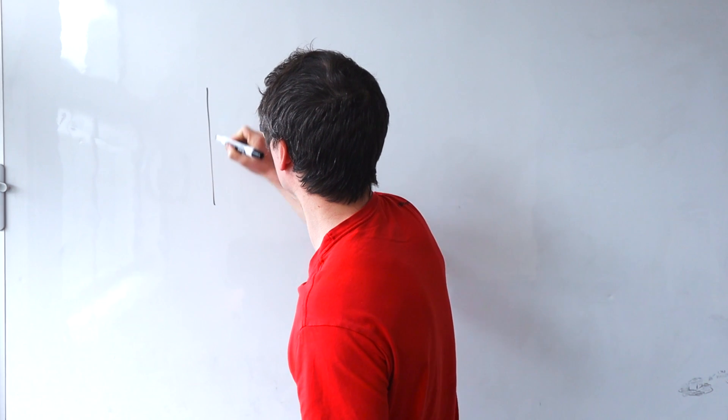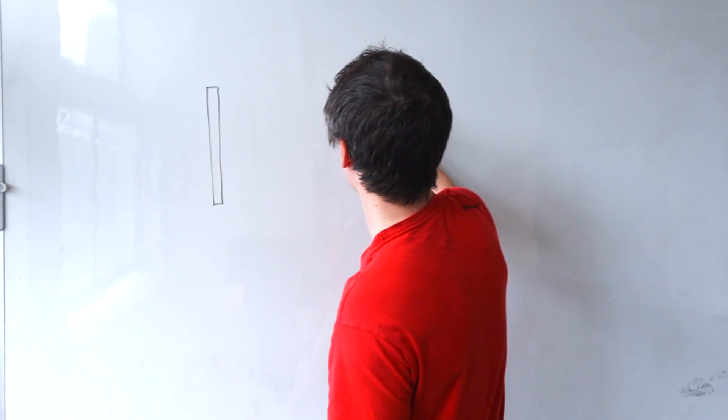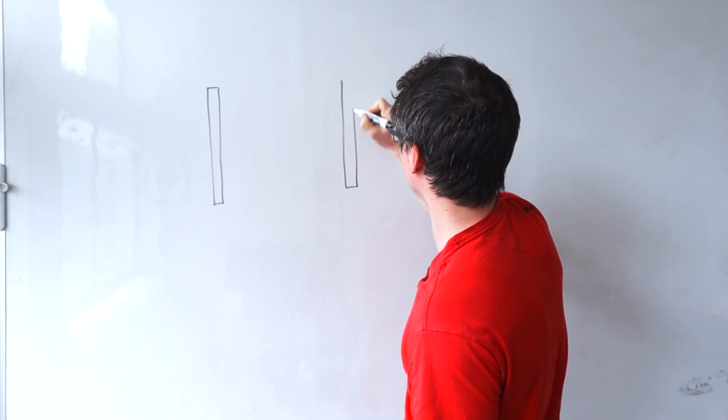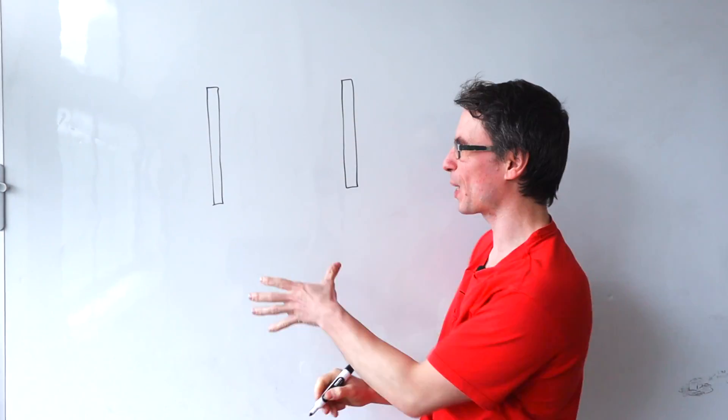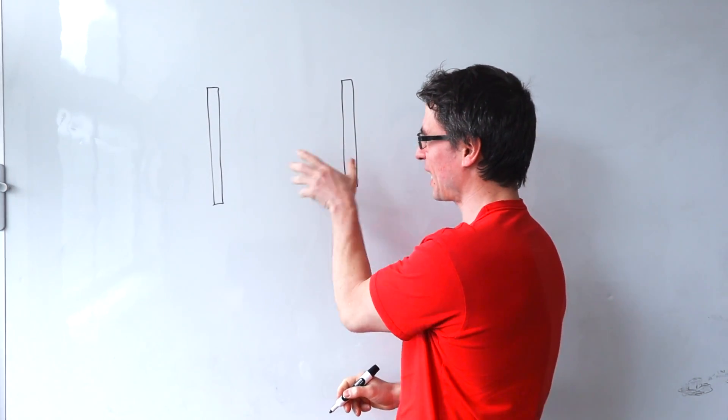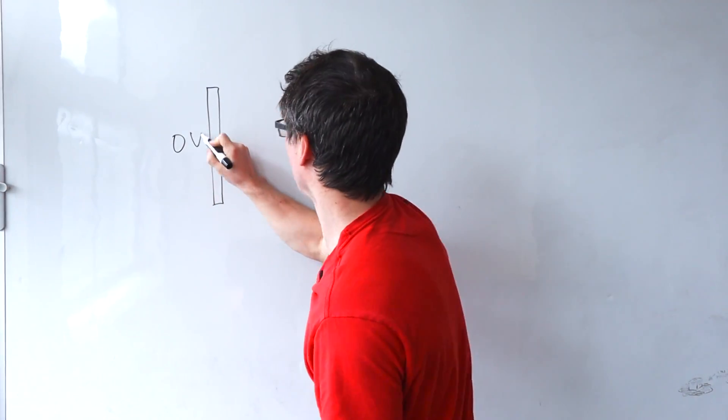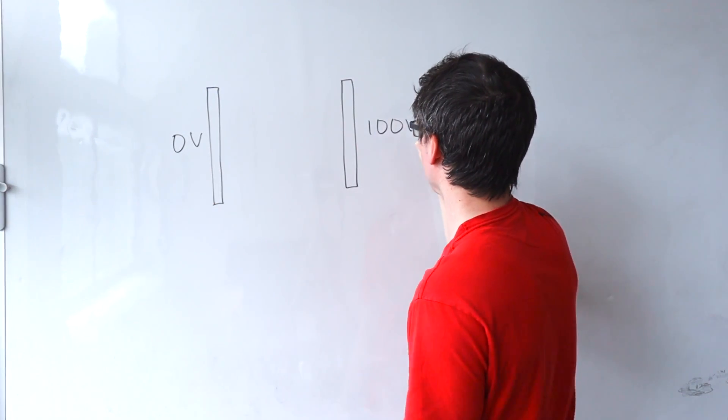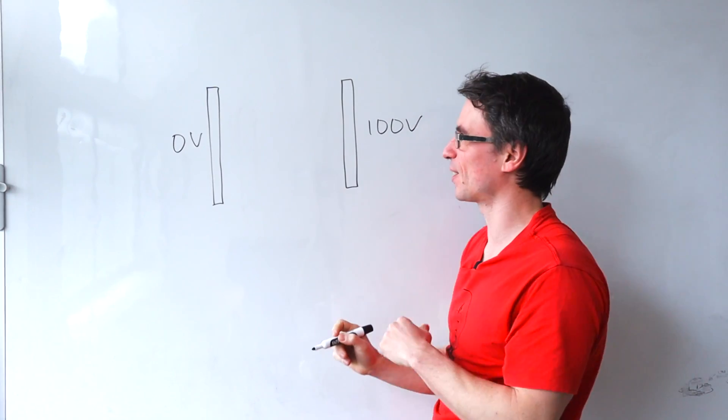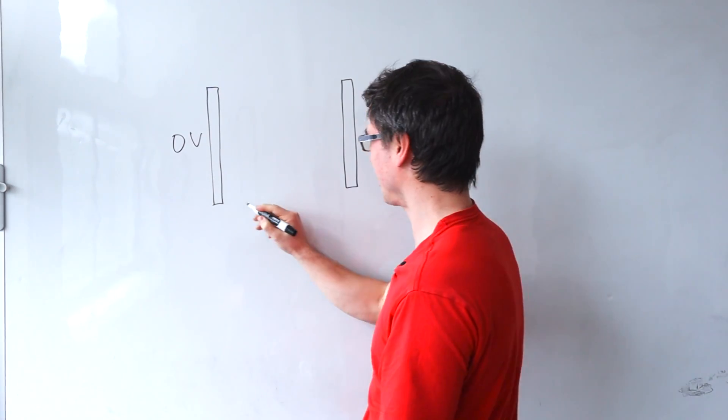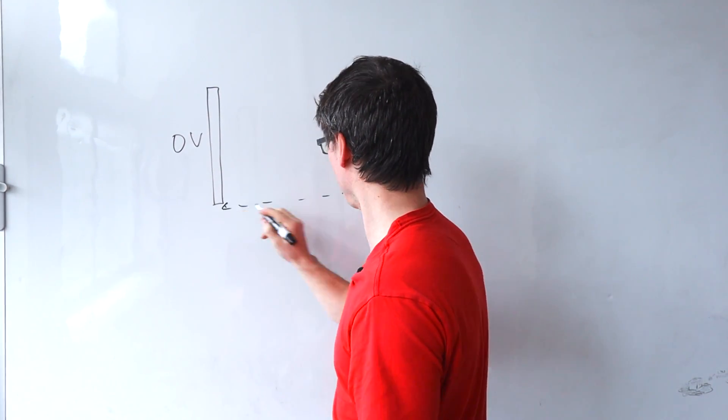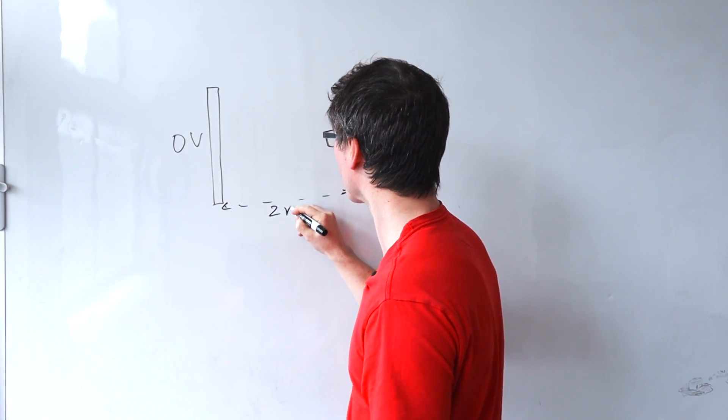We have some parallel plates and let's say that we have connected them to some sort of a power supply and there's going to be a potential difference between them. Let's say that this one here is at zero volts and this one here is at 100 volts to make the numbers easier to calculate.